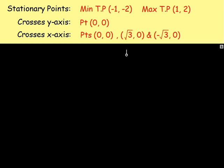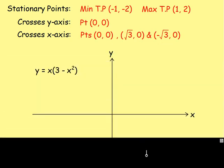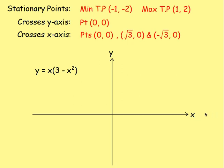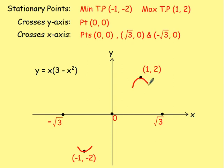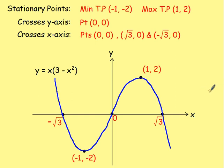That is what we've found, and now we have to graph it. Draw your x-axis and y-axis and start plotting the points. When you're asked to sketch, it doesn't have to be perfectly accurate — just roughly plot where the points go. We have a minimum turning point at (negative 1, negative 2) and a maximum turning point at (1, 2). The graph crosses the x-axis at negative root 3, 0, and root 3, and passes through (0, 0). Join them up and you get the curve — that is your graph.